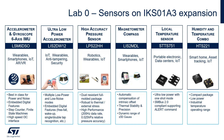Fourth, a magnetometer, LIS2MDL. The intrinsic offset is compensated internally. It is low noise and it can be used in e-compass applications. It has also a very large dynamic range of 50 Gauss, so it can be used as a contact or distance sensor with respect to an external magnet.